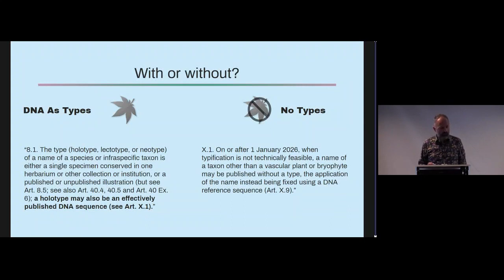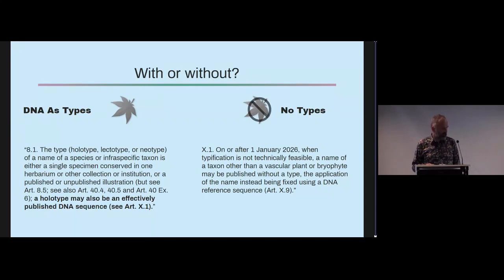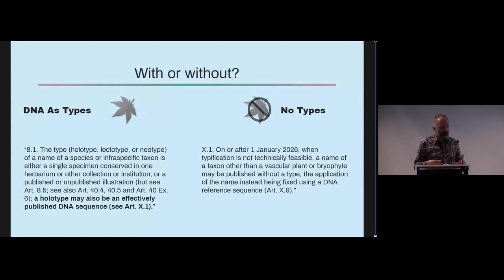We basically came up with two proposals. You can have DNA as a type, as has been suggested for prokaryotes. This is quite attractive because it means every name can have a type associated with it — whether that's a DNA or a visible type. Or you can have a proposal whereby you have no type. There are tons of names out there with no type, and we seem to manage with a lot of names with no type specimen. A DNA sequence is not really like a type specimen; it's more like a diagnosis. Some people prefer everything having a type, some prefer no types.